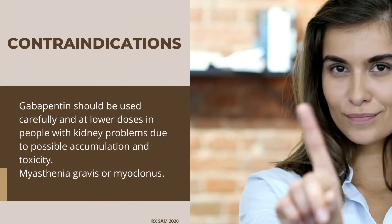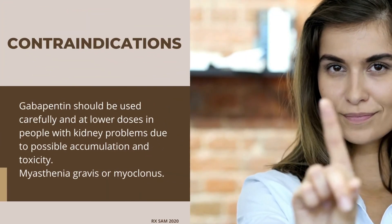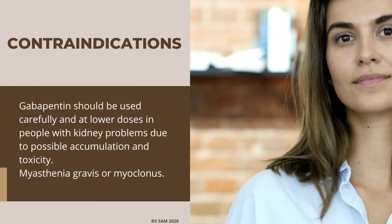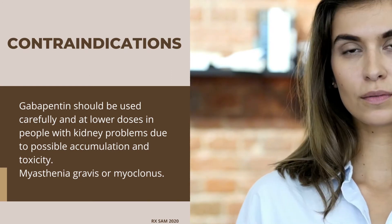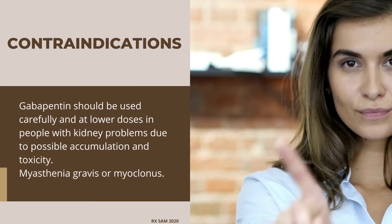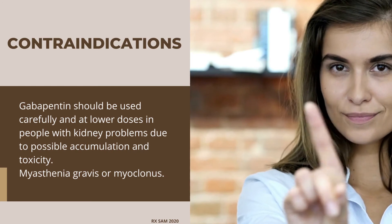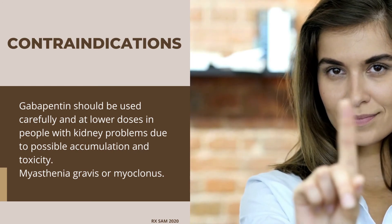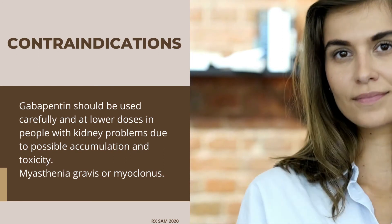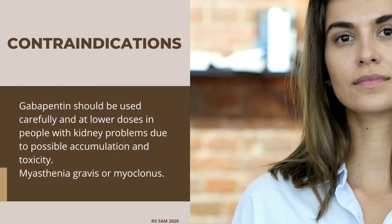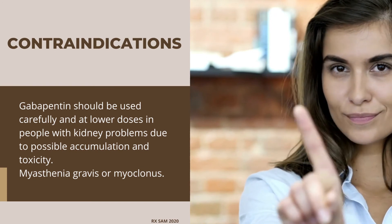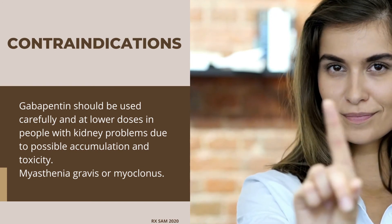Contraindications: gabapentin should be used carefully and at lower doses in people with kidney problems due to possible accumulation and toxicity. It should also be used with caution in patients with myasthenia gravis or myoclonus.